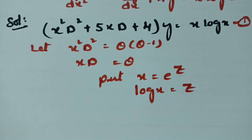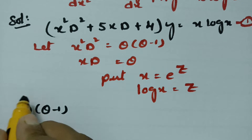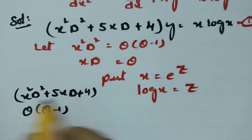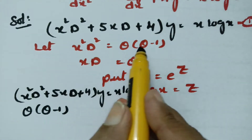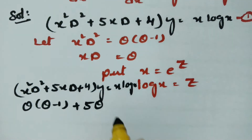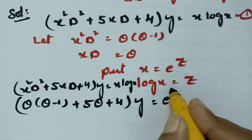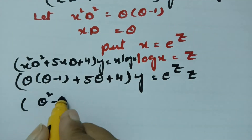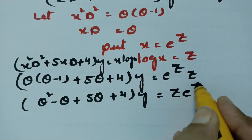In place of x squared D squared, write theta times (theta minus 1). So the equation becomes: theta(theta minus 1) plus 5 theta plus 4 of y equals x log x. Here x equals e to the power z and log x equals z, so the right-hand side becomes z times e to the power z. Expanding gives theta squared minus theta plus 5 theta plus 4 of y equals z times e to the power z.